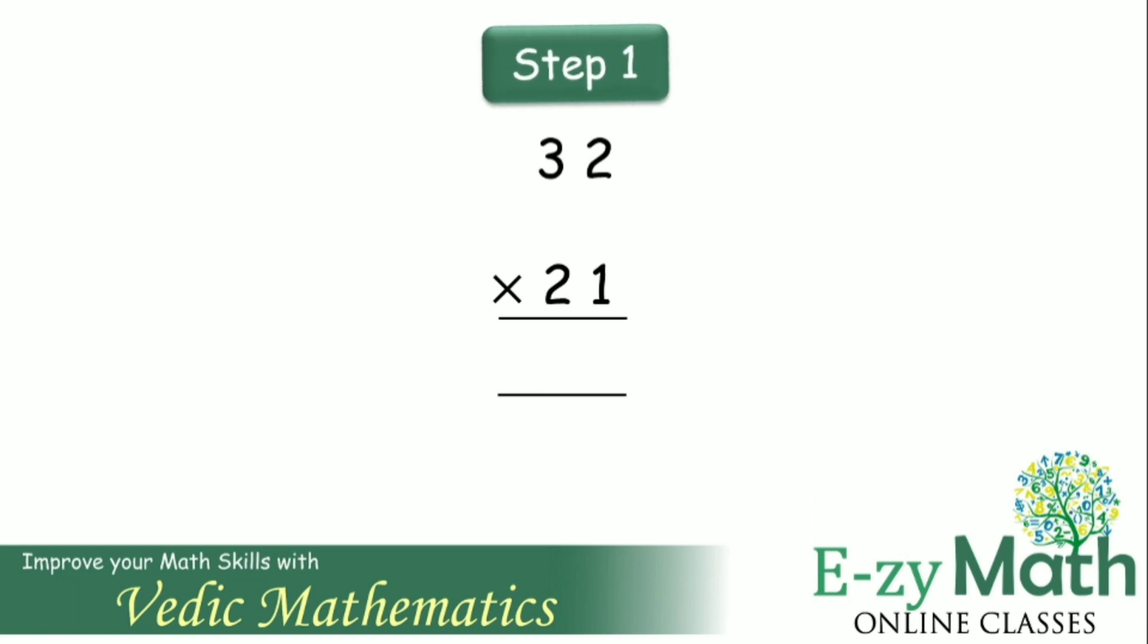Step 1: Obtaining the units digit of the answer. To obtain the units digit of the product, simply multiply the units digits together. That is 2 into 1 gives 2.